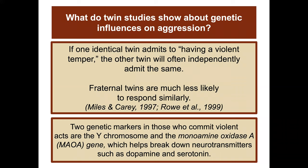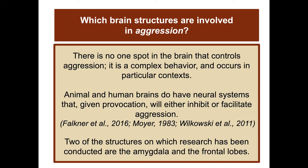Two genetic markers in those who commit violent acts are the Y chromosome and the monoamine oxidase A gene (MAOA gene), which helps break down neurotransmitters such as dopamine and serotonin. There is no one spot in the brain that controls aggression — it is a complex behavior that occurs in particular contexts. Animals and human brains have neural systems that, given provocation, will either inhibit or facilitate aggression.